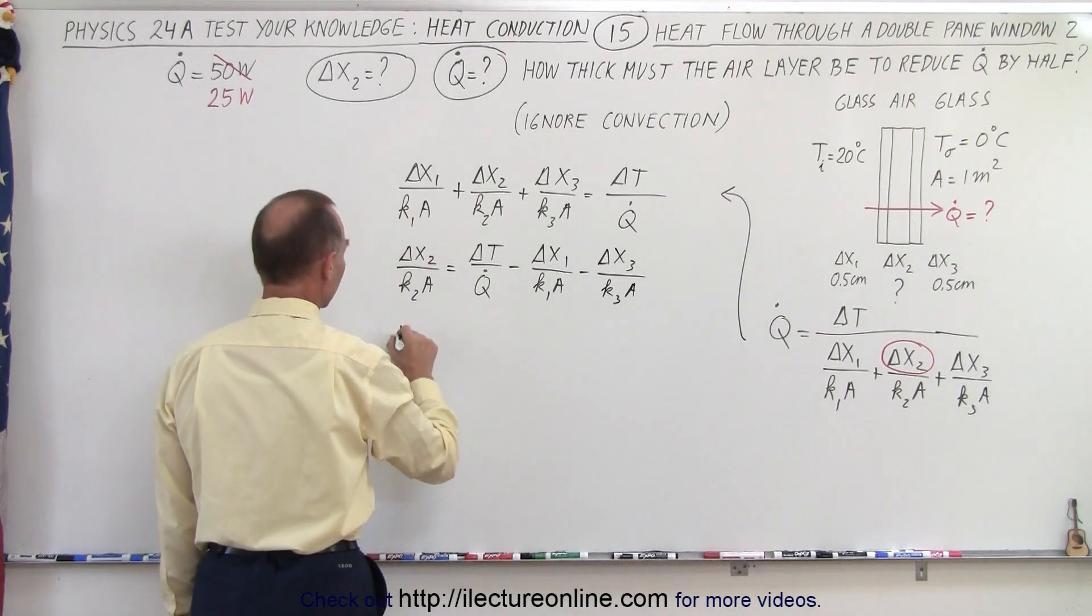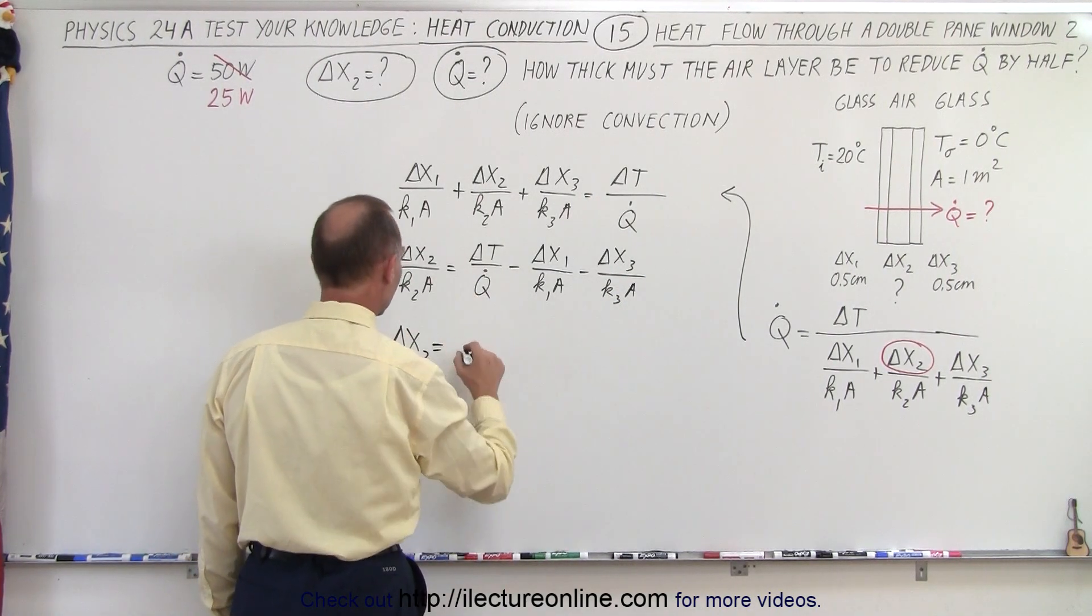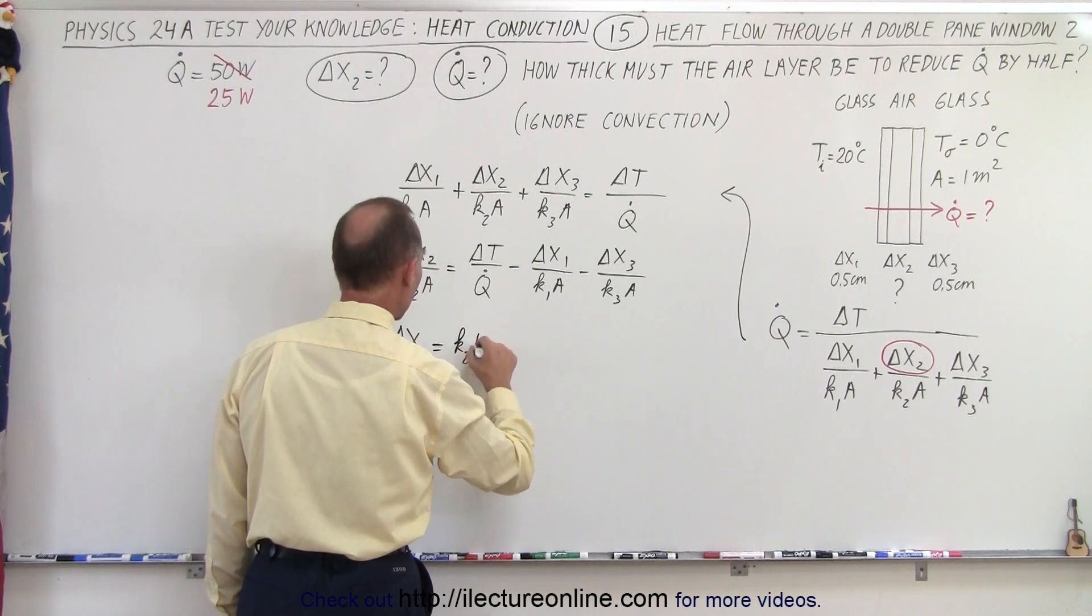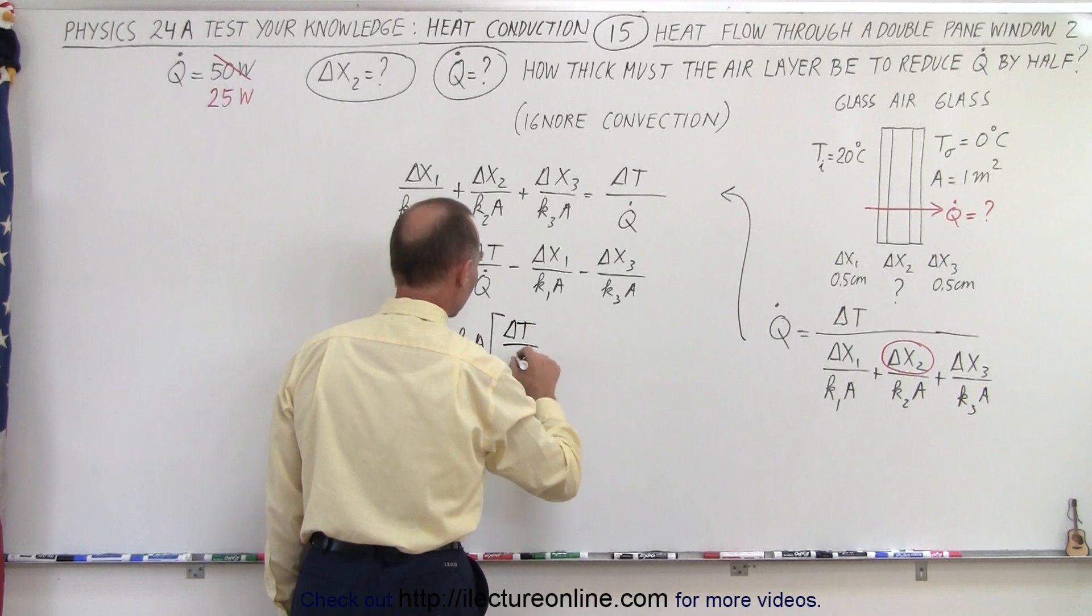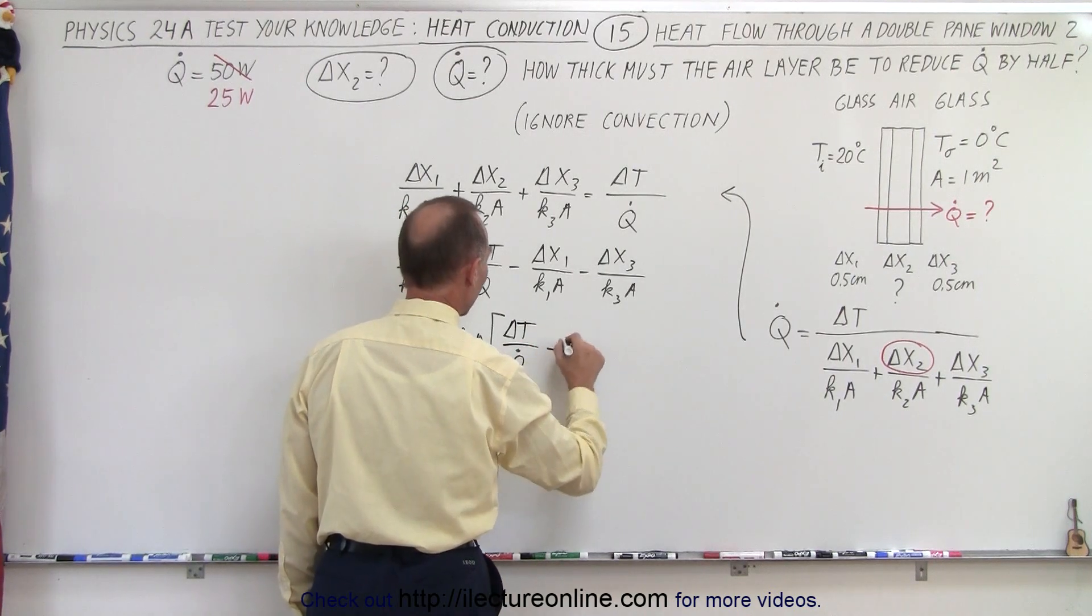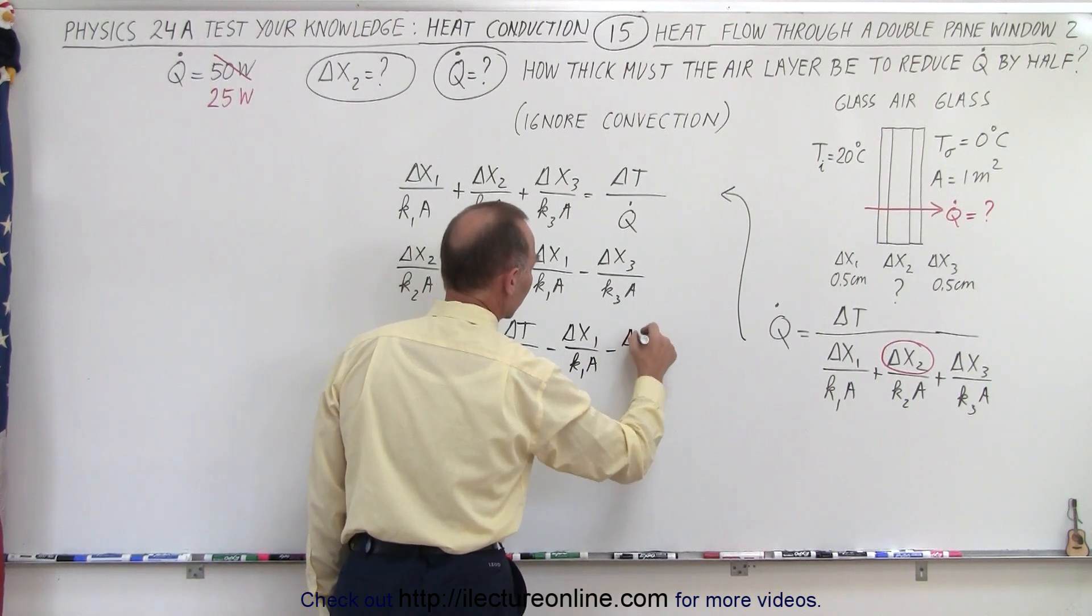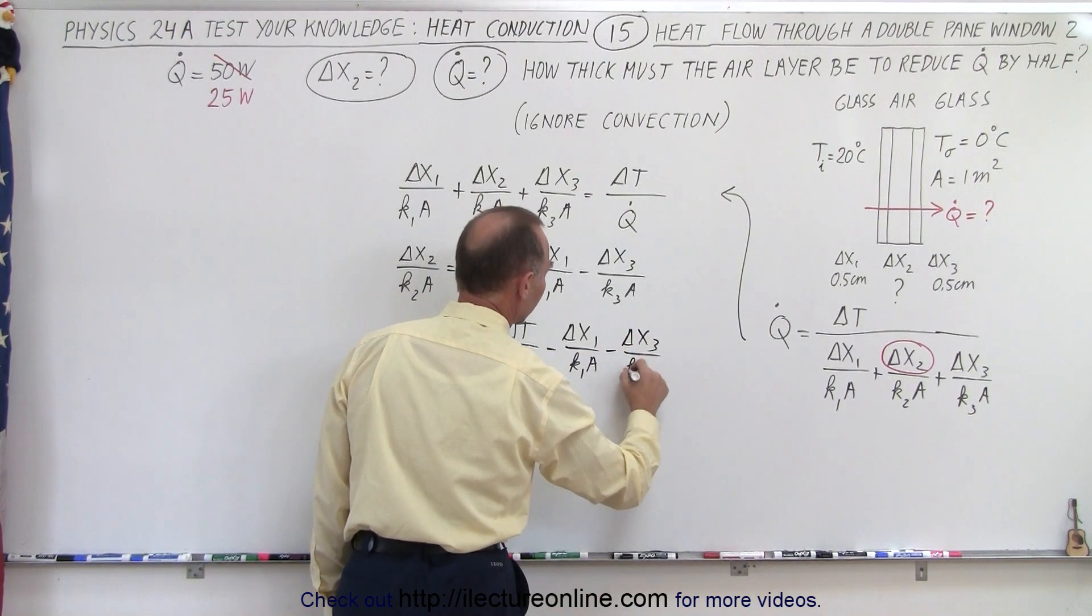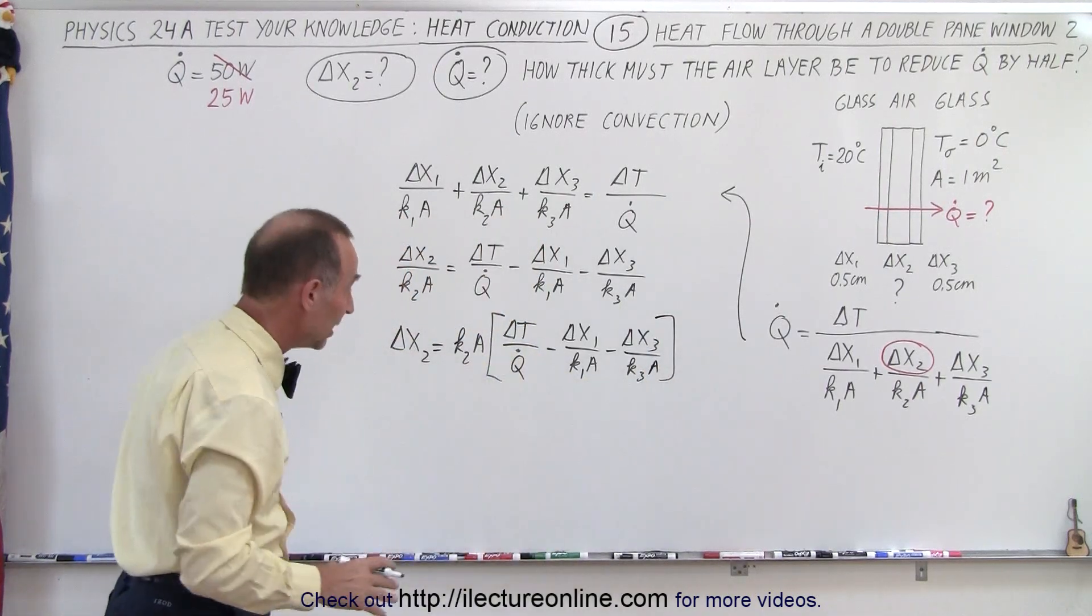And finally delta x2 is going to be equal to, let's see we have to cross multiply, so k2a multiply times delta t q dot divided by q dot minus delta x1 divided by k1a minus delta x3 divided by k3a. So there it is. That's the equation we're going to need.